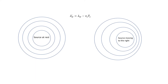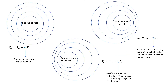When the source is moving to the right, the wavelength on the right side is shorter compared to when the source was at rest. It depends on the direction: if v_s is positive (source moving right), the new wavelength is smaller because you subtract a positive number. If the source moves to the left, v_s is negative, so negative minus negative gives a positive addition, resulting in a bigger wavelength.